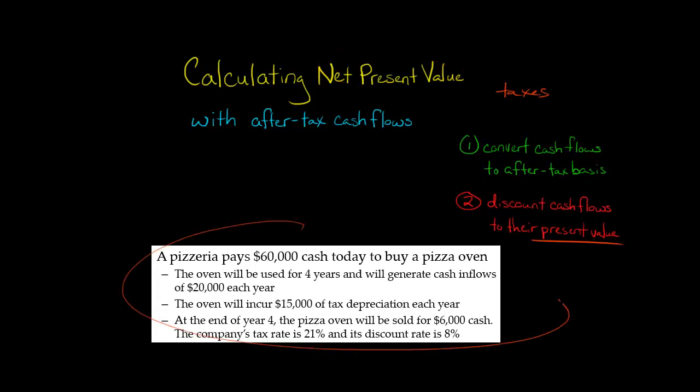Let's take this problem as an example. A pizzeria pays $60,000 cash today to buy a pizza oven. They're going to use that oven to generate $20,000 of cash flow each of the next four years. They're going to depreciate the oven, taking $15,000 of depreciation every year. At the end of year four, they're going to sell the oven for $6,000. They've got an income tax rate of 21% and a discount rate of 8%.